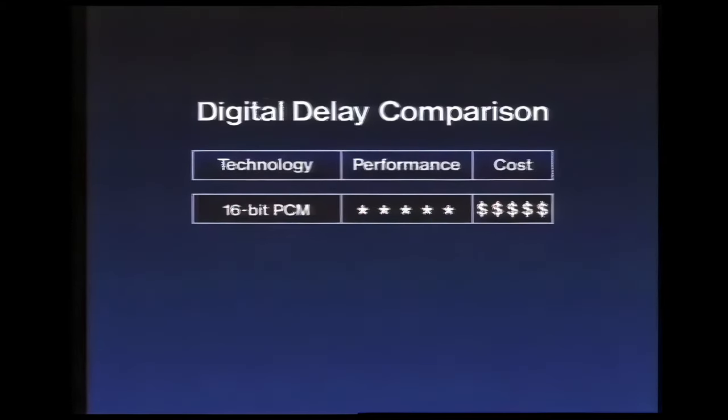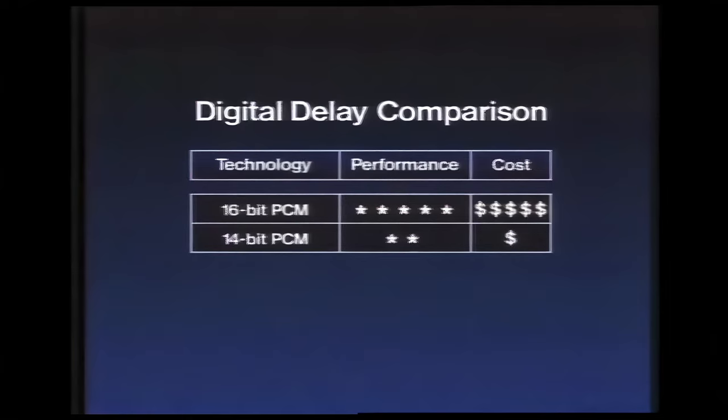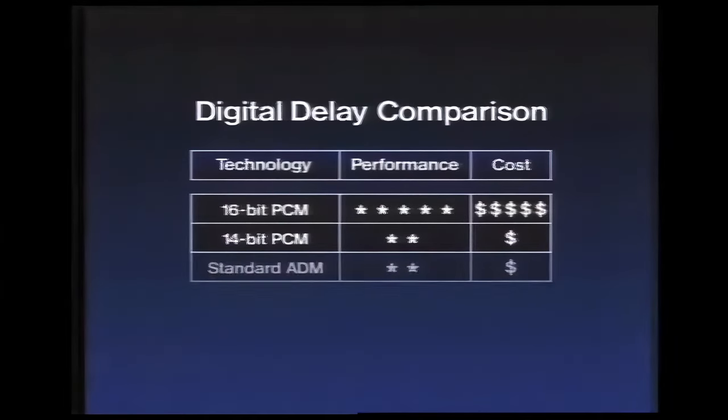16-bit PCM, the standard system used in compact discs, is certainly an excellent technology, but it's also one of the most expensive. To reduce cost and complexity, PCM circuits with lower precision, from 12 to 15 bits, have been introduced with a corresponding reduction in dynamic range. Another low-cost system uses a conventional form of adaptive delta modulation, or ADM. Traditionally, ADM has had a bad reputation for audible noise modulation and poor high-frequency headroom, relegating it for use in telephone answering machines and the like. Both of these alternatives to 16-bit PCM offer low cost, but neither are in the same class when it comes to dynamic range and sound purity.